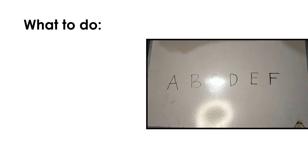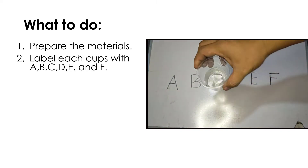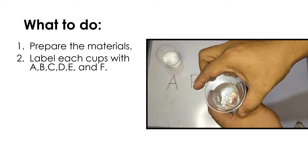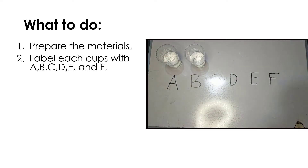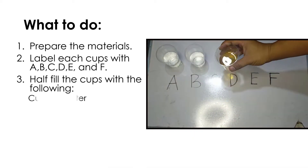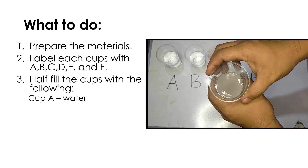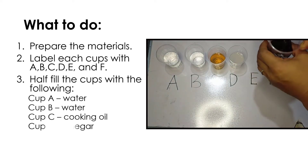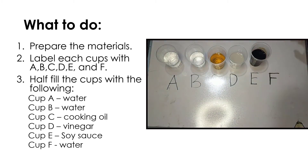Here is the procedure. Number one: prepare the materials. Number two: label each cup with A, B, C, D, E, and F — we have six cups. Number three: half-fill the cups as follows — Cup A with water, Cup B with water, Cup C with cooking oil, Cup D with vinegar, Cup E with soy sauce, and Cup F with water.